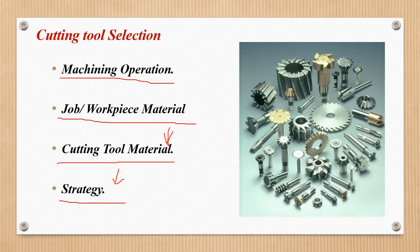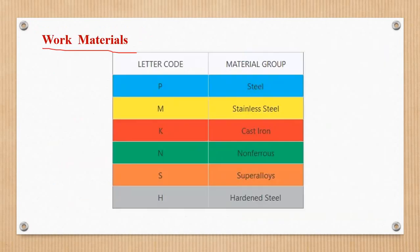Next is work piece. If you don't know how to use the material in this type of method, you can categorize. The blue color is stainless steel. K is cast iron, N is non-ferrous, S is super alloys, H is hardened material.